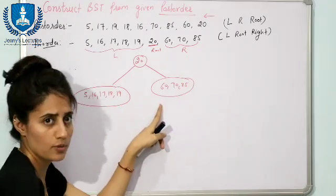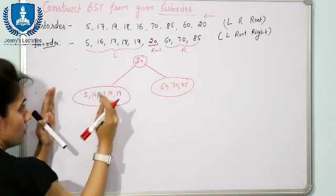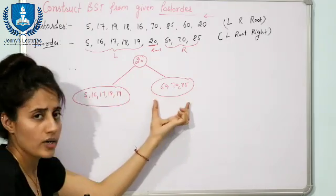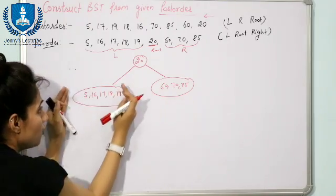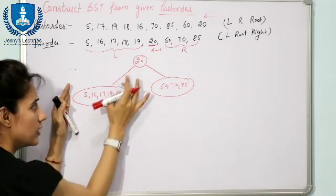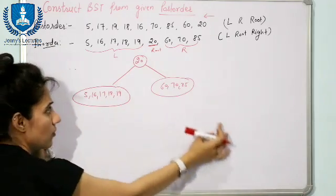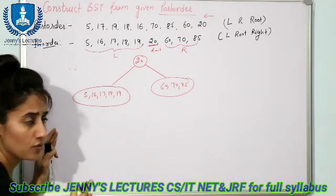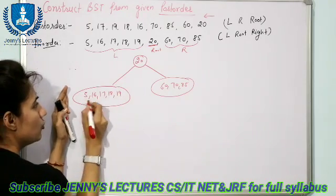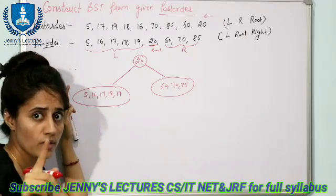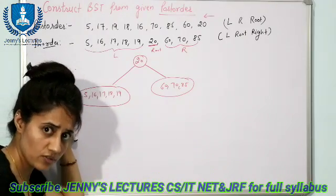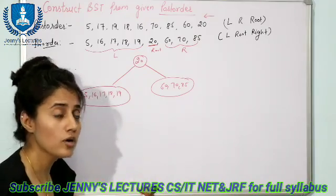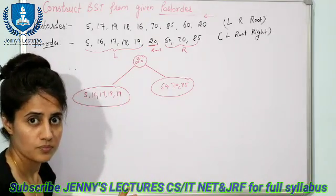The problem is now divided into two parts — the left subtree and the right subtree. We'll construct the left subtree first. Out of the elements {5, 16, 17, 18, 19}, we need to find the root. To find the root, we check the post-order traversal and traverse it from right to left.